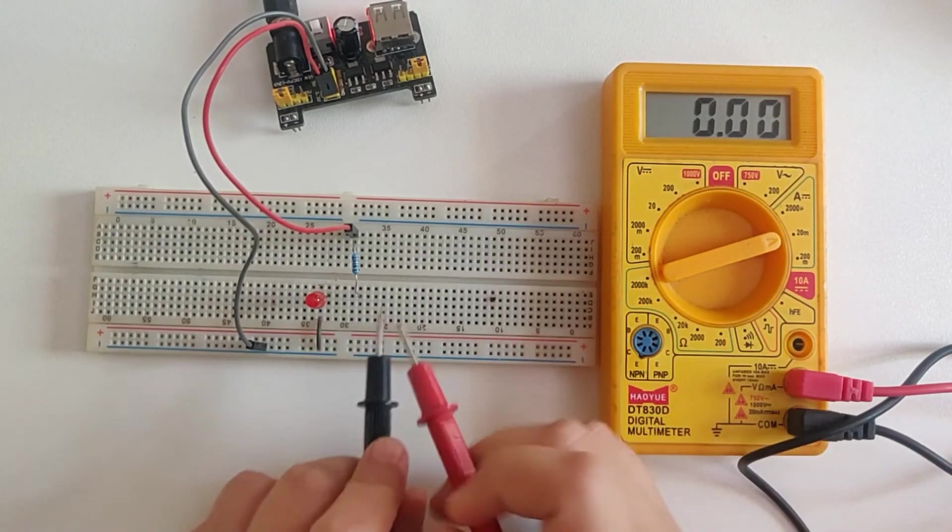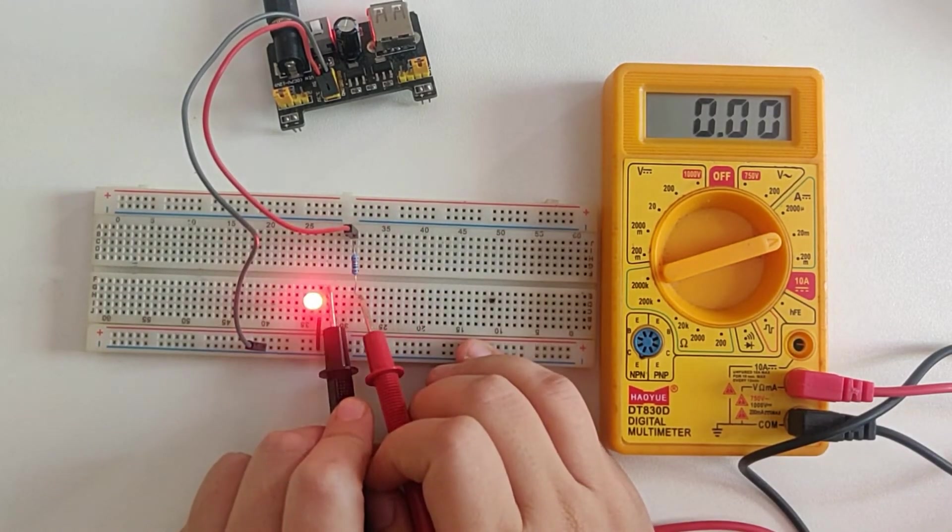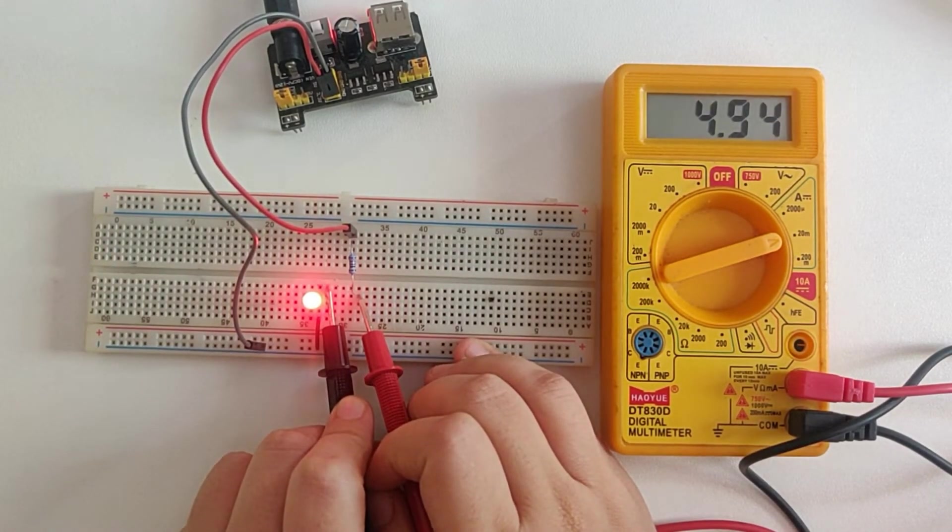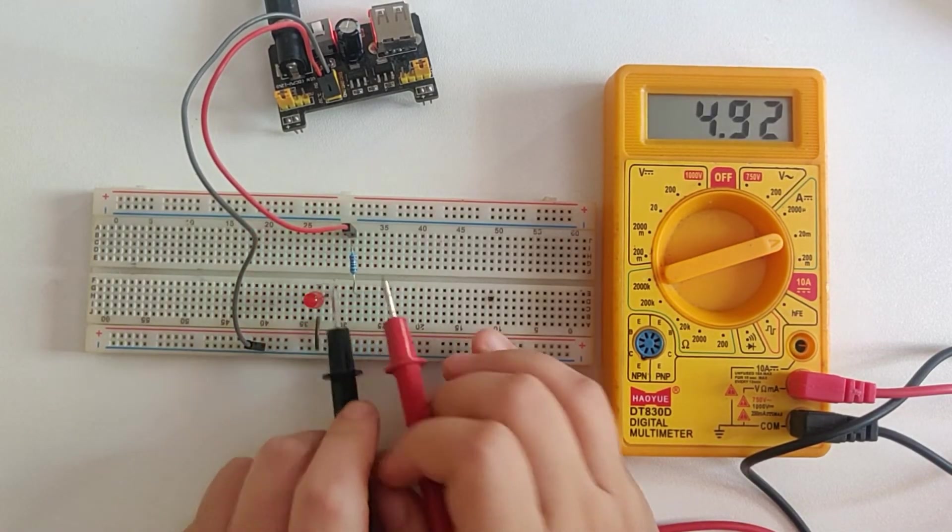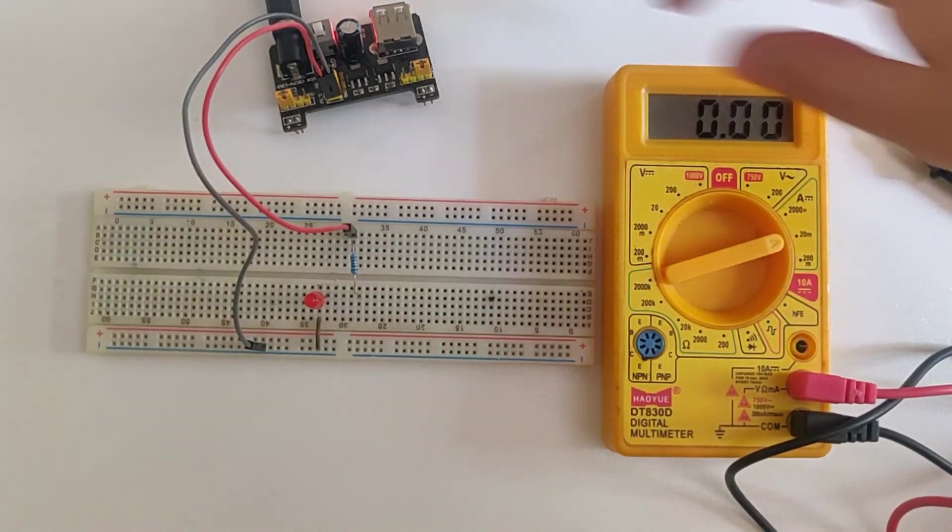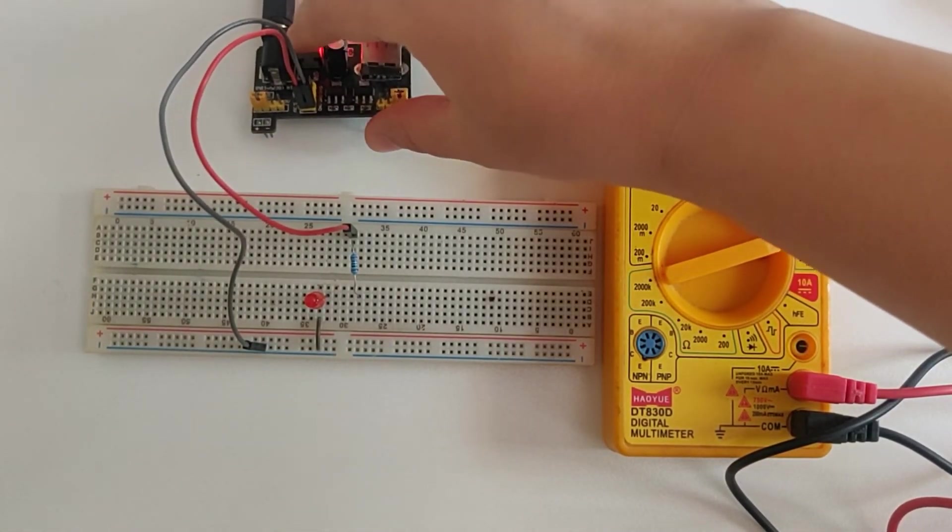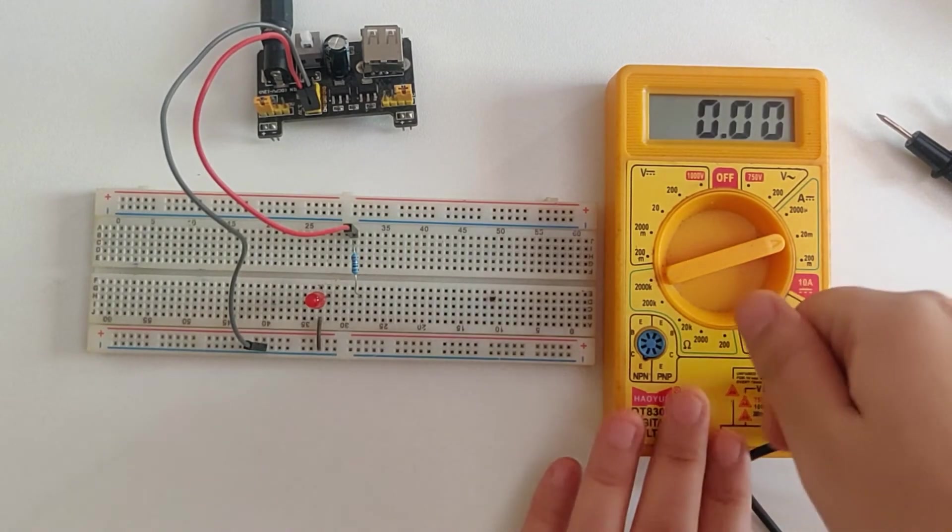And I'm getting approximately 5 milliamperes. Let me just lower down the range. Let's select 20 milliamperes to see if that makes any difference. And now I'm getting, I'm still getting around 4.97, which is approximately 5 milliamperes. So yeah, that's how you can measure the current of a circuit using a multimeter.